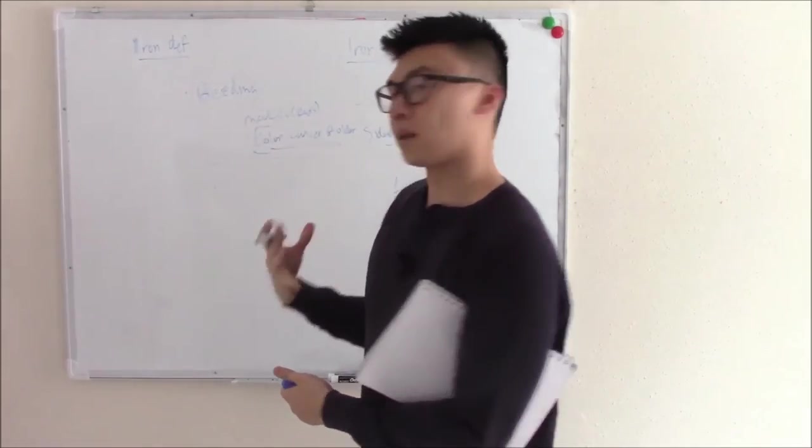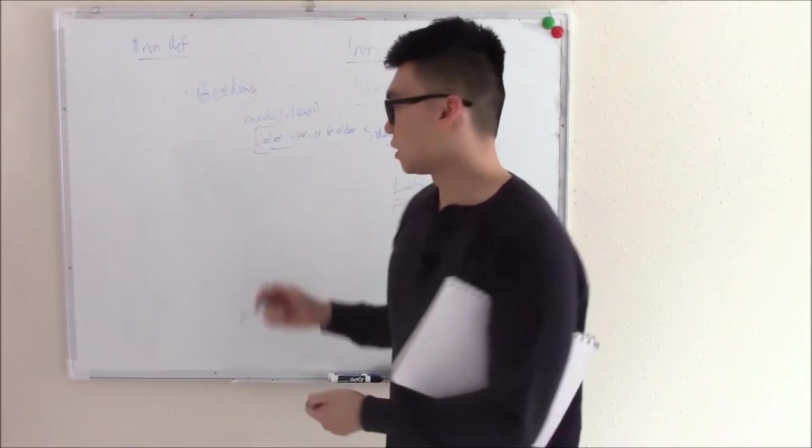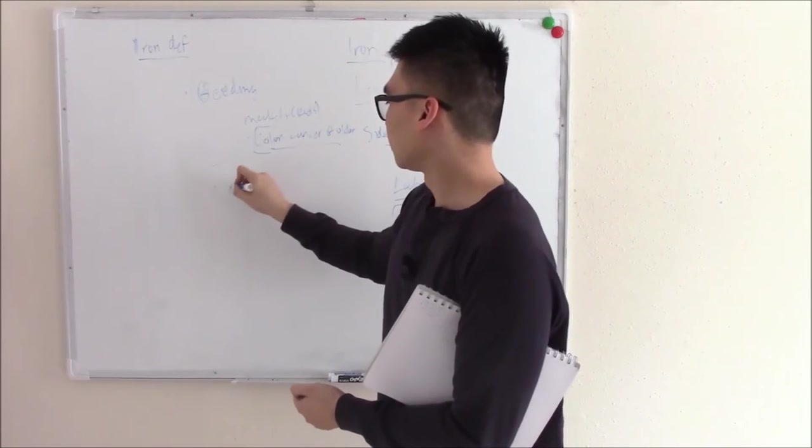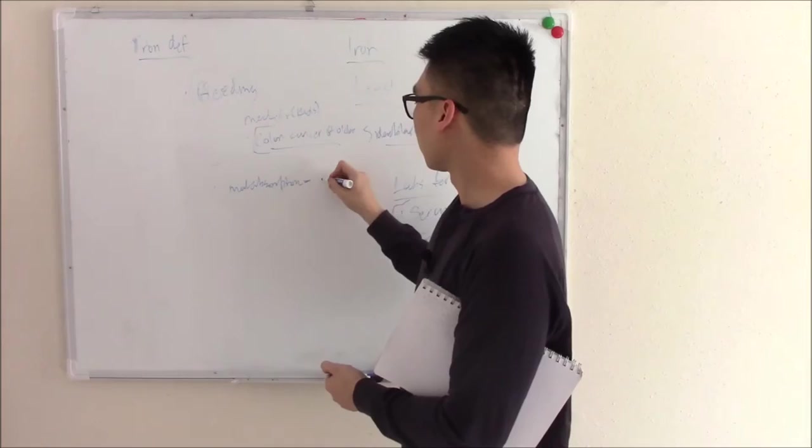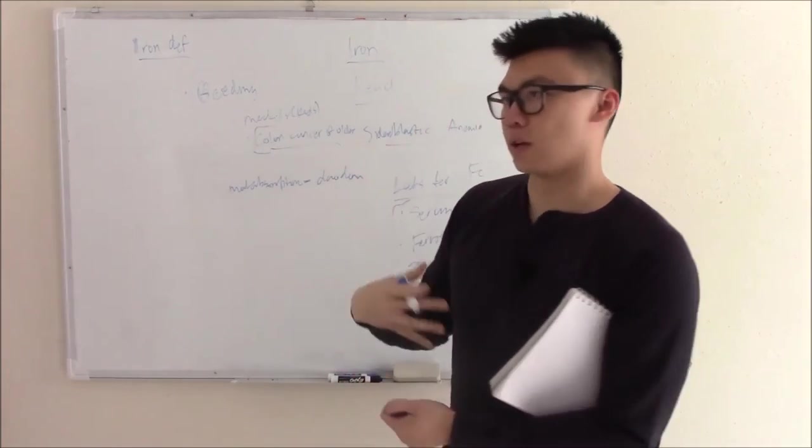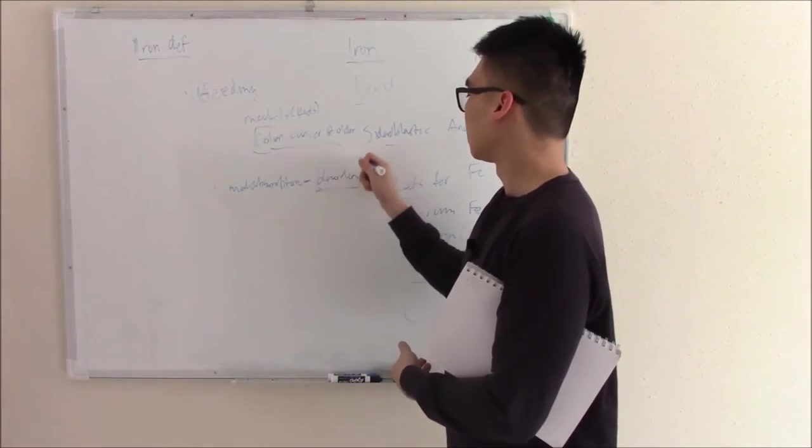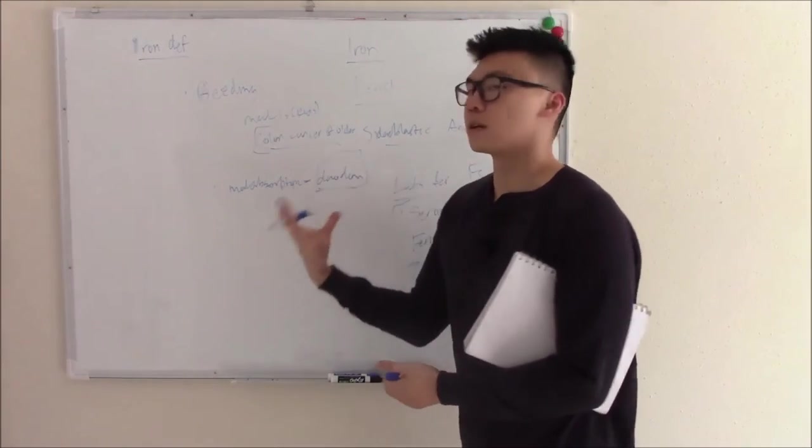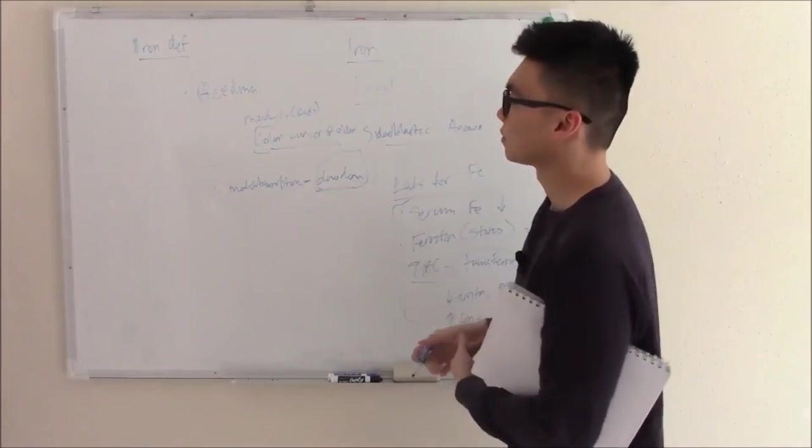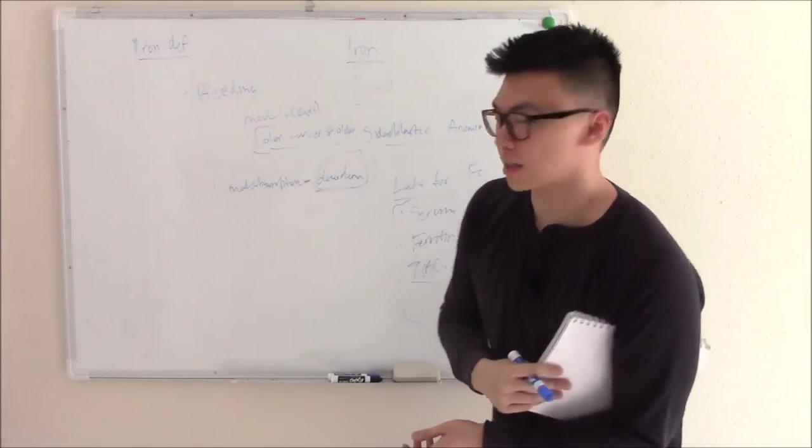Another cause is malabsorption. Where did I say you absorb your iron? Your duodenum. So malabsorption. So anything that affects your ability to absorb things or anything that affects your duodenum. So if you had it resected for whatever reason, if you had Crohn's, then you could affect your ability to absorb iron. Those are just some causes. There are a little bit more in my notes.